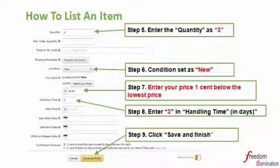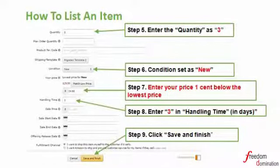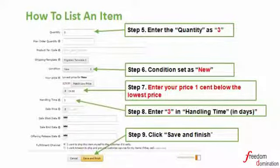We are going to fill out only four particulars which are the most important: quantity, condition, your price, and handling time. Please set quantity to three — this number is just right to get the buy box. Next, please set condition to 'New.'